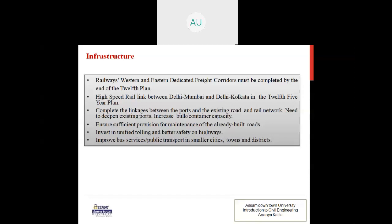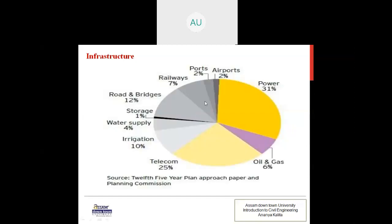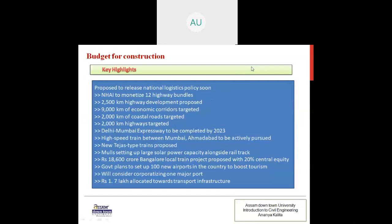Plans also include expanding existing ports to increase bulk and container capacity, ensuring sufficient provision for maintenance of already-built roads, investing in unified tolling and better safety on highways, and improving bus services and public transport in smaller cities, towns, and districts. A pie chart here shows the infrastructure allocation of the 12th Five-Year Plan.